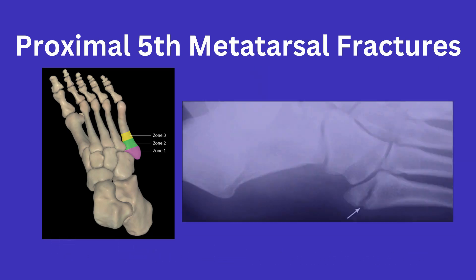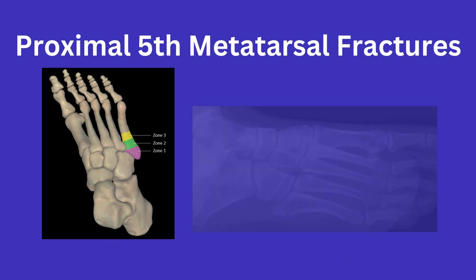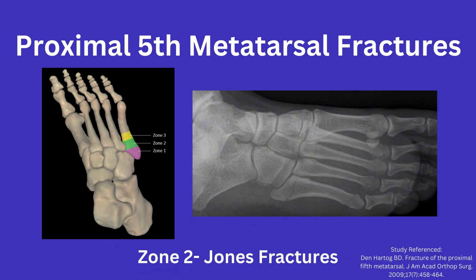Fractures through zone 1 are colloquially called pseudo-Jones fractures, which can involve an avulsion of the tubercle. Fractures through zone 2 are commonly referred to as a Jones fracture, which extend into the 4th and 5th metatarsal articulation. Being a relatively avascular zone, fractures here have higher non-union rates, with some studies reporting up to 15 to 30 percent.